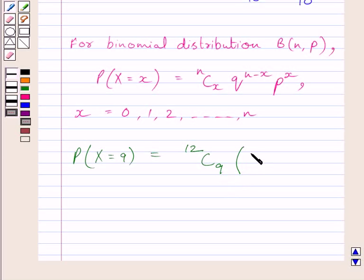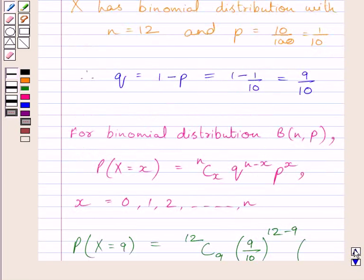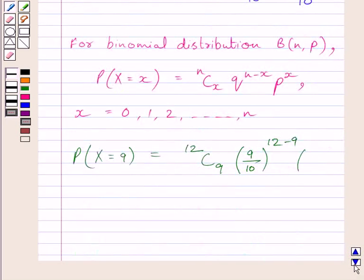The value of q is 9 upon 10. Here we substitute 12 for n and 9 for x, so we write 12 minus 9. The value of p is 1 upon 10, and we substitute 9 for x.